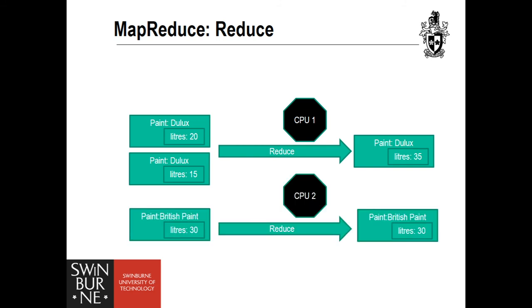When a mapping process has finished, each result is sent to a reduce function. In the basic MapReduce implementation, only one reduce function collects all results. When there is only one key being searched, this may be fast enough. But if we are looking for information about several products, the reduce function can be partitioned so that one reduce function handles one or a few keys, and all the partitioned functions work in parallel.